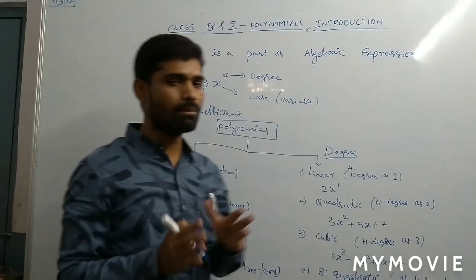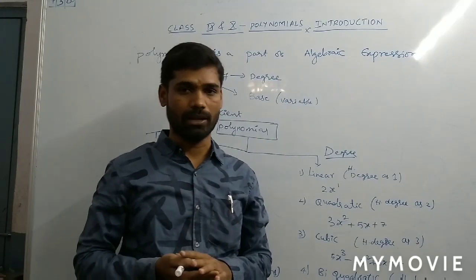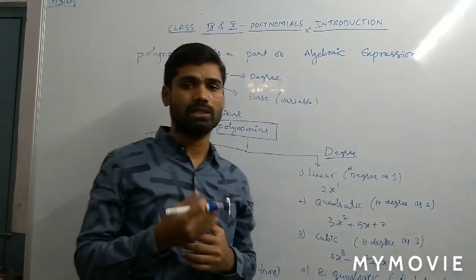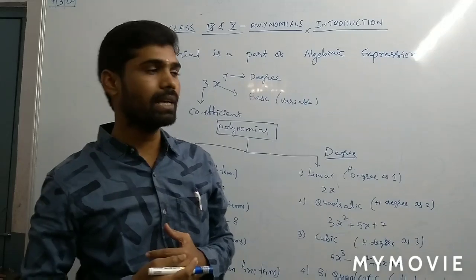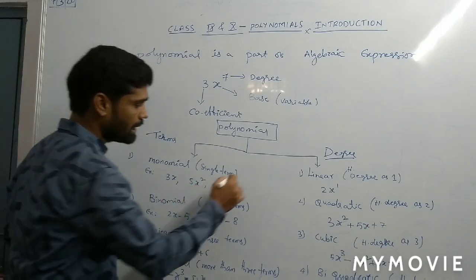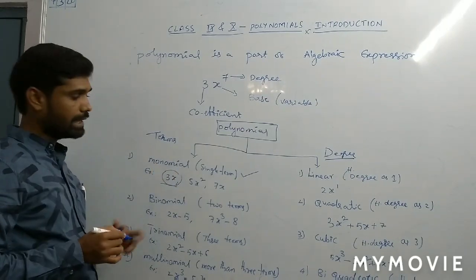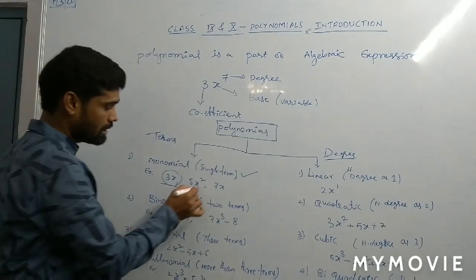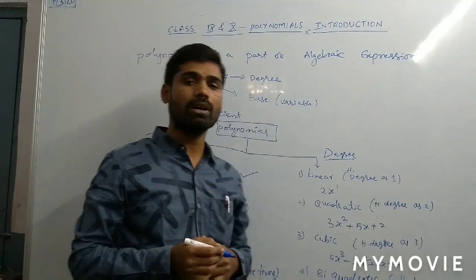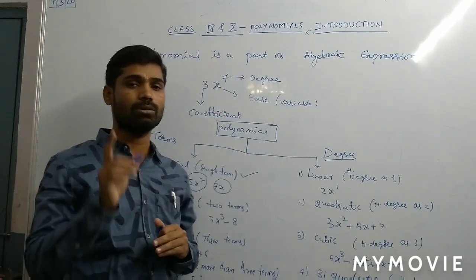Polynomials can be described into two types based on the terms. Terms means one term, two terms, three terms, four terms, and so on. When we have a single term, it is called a monomial. For example, 3x has only one term, so it is called a monomial. Also, 5x power 2 and 7x are examples of monomials. Mono means single, so monomial is where it has only a single term.